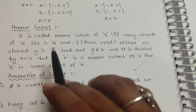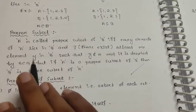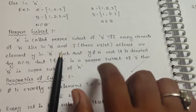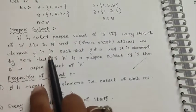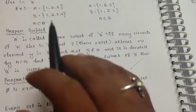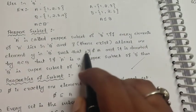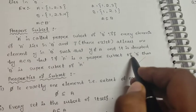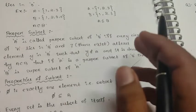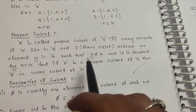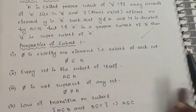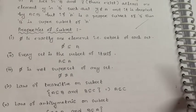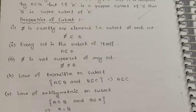Next, proper subset. A is called a proper subset of B if and only if every element of A lies in B, and there exists at least one element Y in B that does not belong to A. A is a proper subset of B is denoted accordingly.